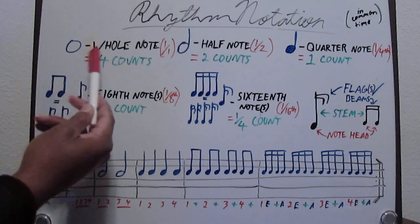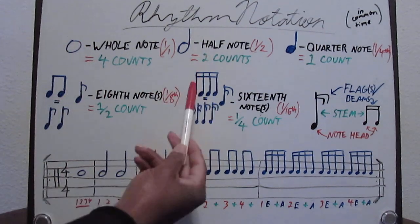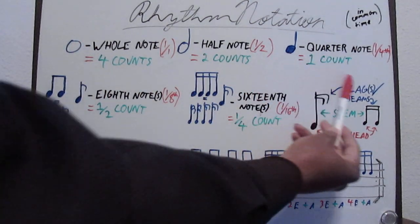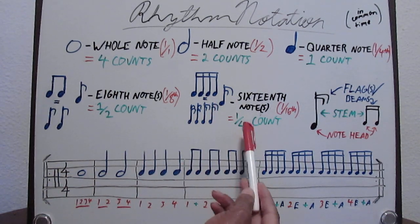We're going to have a whole note here as the first basic note. Going to get four counts. A half note is going to get two counts. Quarter note is going to get one count. Eighth note is going to get a half a count. And a sixteenth note is going to get one fourth of a count.